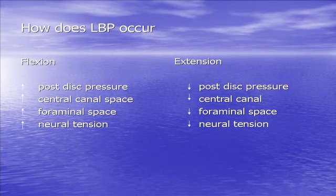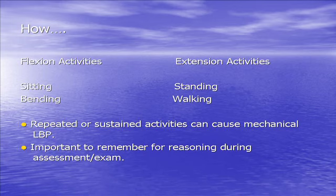Looking at the basic movements — flexion and extension, plus some side gliding and rotation — essentially lumbar spine flexion and extension. In flexion you're increasing your posterior discal pressure, increasing your central space, your pyramidal space and your neural tension. Going into a more upright position reverses that. So flexion activities like sitting and bending, versus standing and walking into extension — it's important to remember these things for your clinical reasoning.